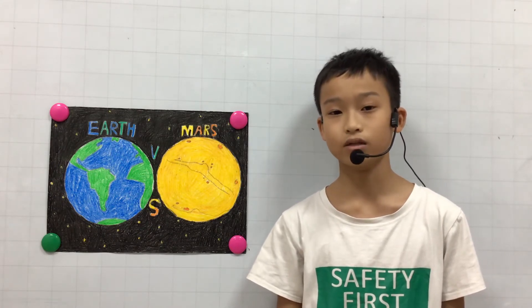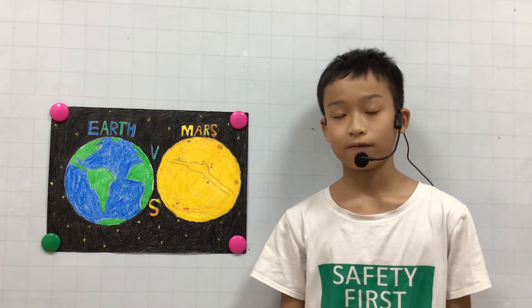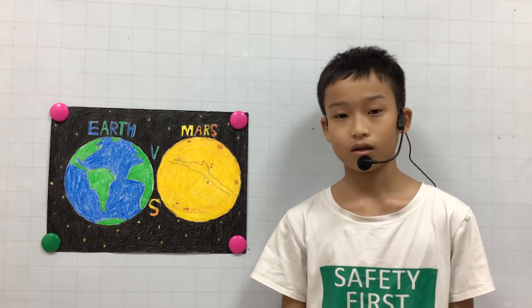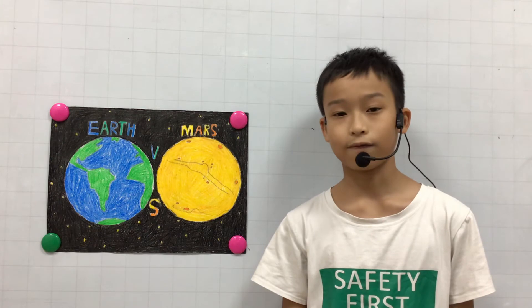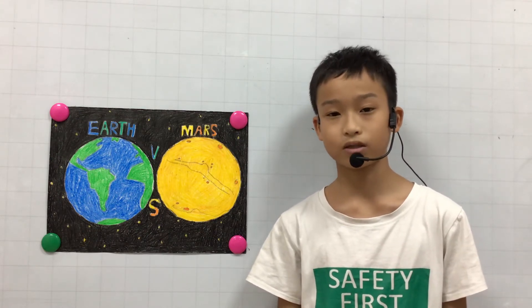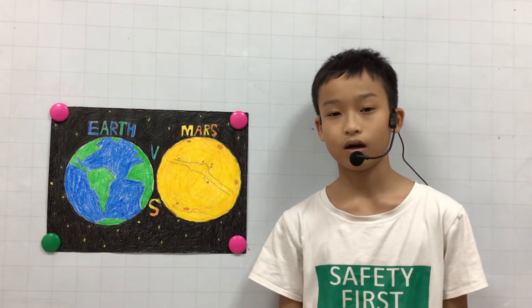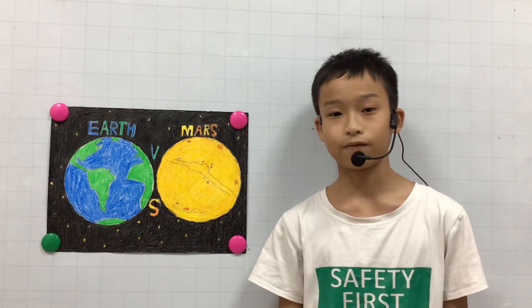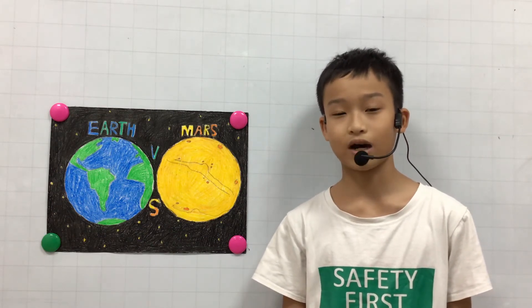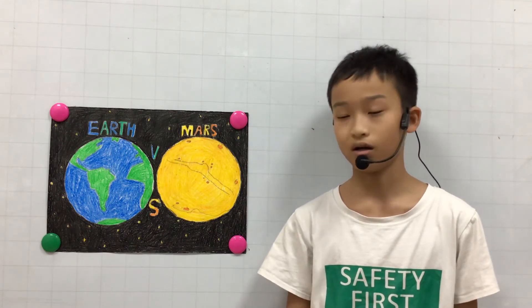Life on Earth includes humans and animals. And finally, Mars is further from the sun than Earth, so that's why Mars is colder than Earth.